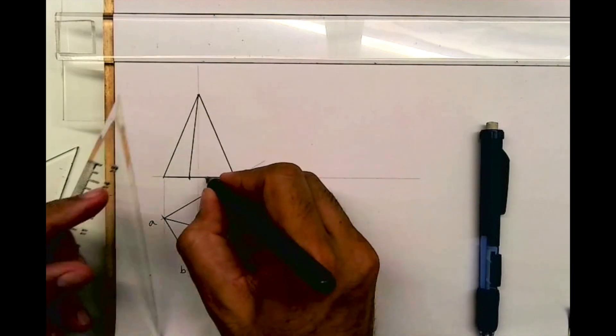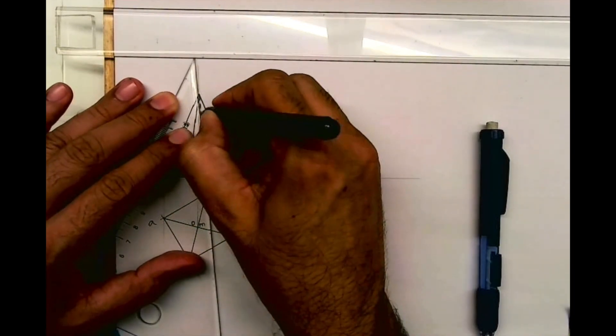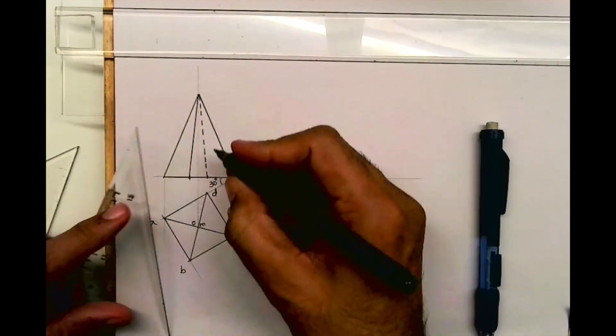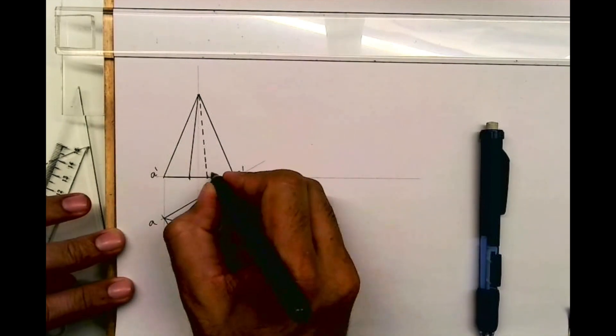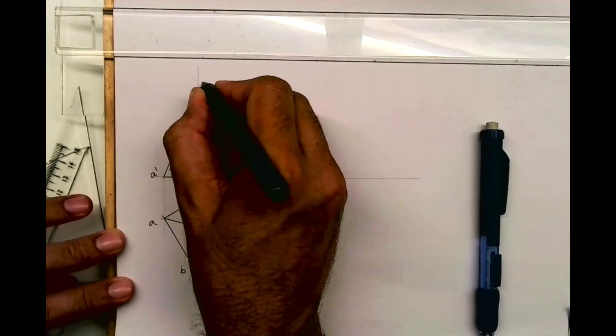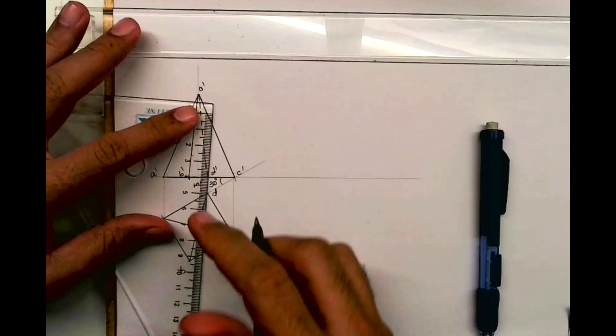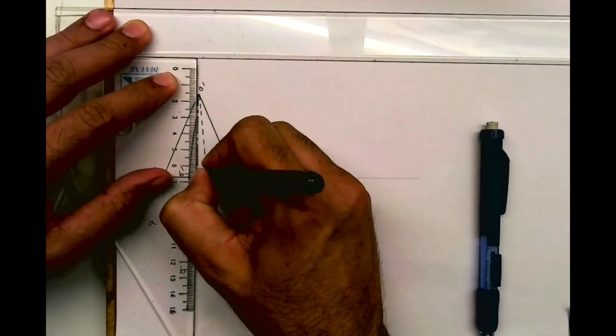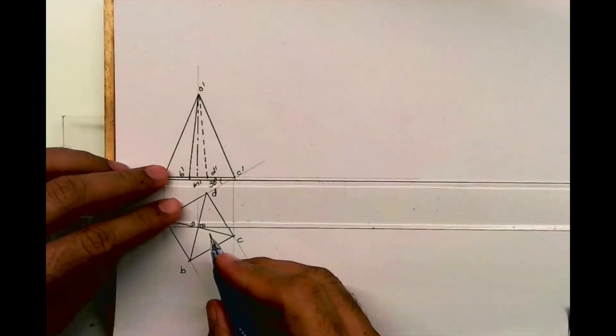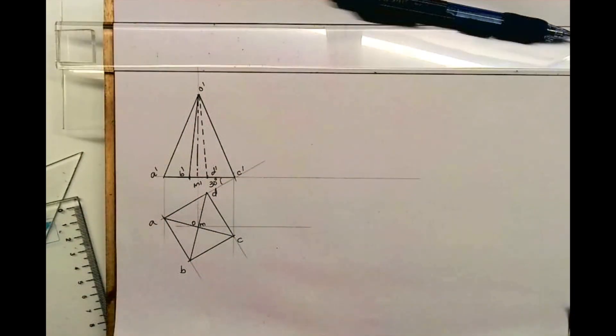O dash D dash will be dotted. Whenever I write dash that means front view. This is done. Now for development what we need to do, we need to take O to C and rotate.